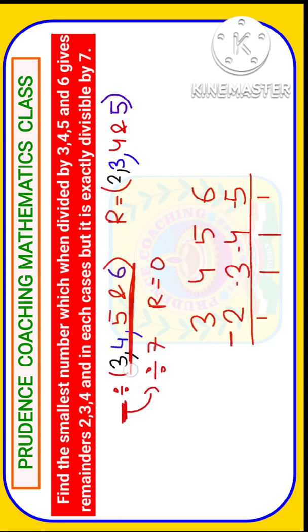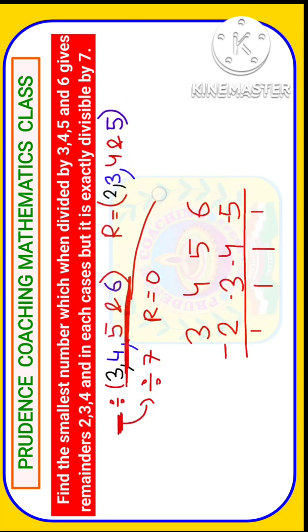How to find out this number? To find the number, first we will find out the LCM of these numbers. The LCM of 3, 4, 5, and 6 is 60. So 60 is the smallest number which can be divisible by all these numbers.